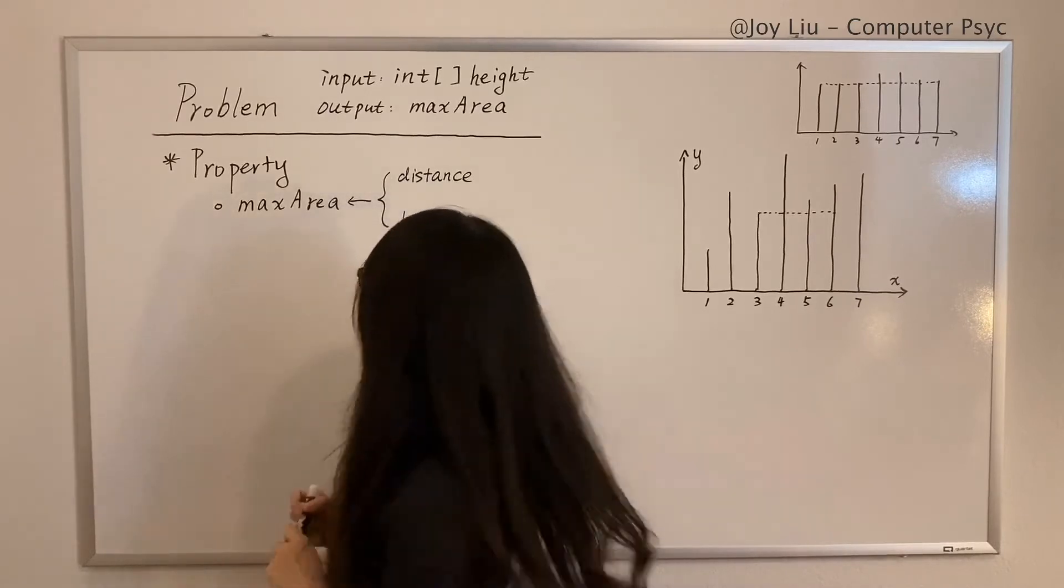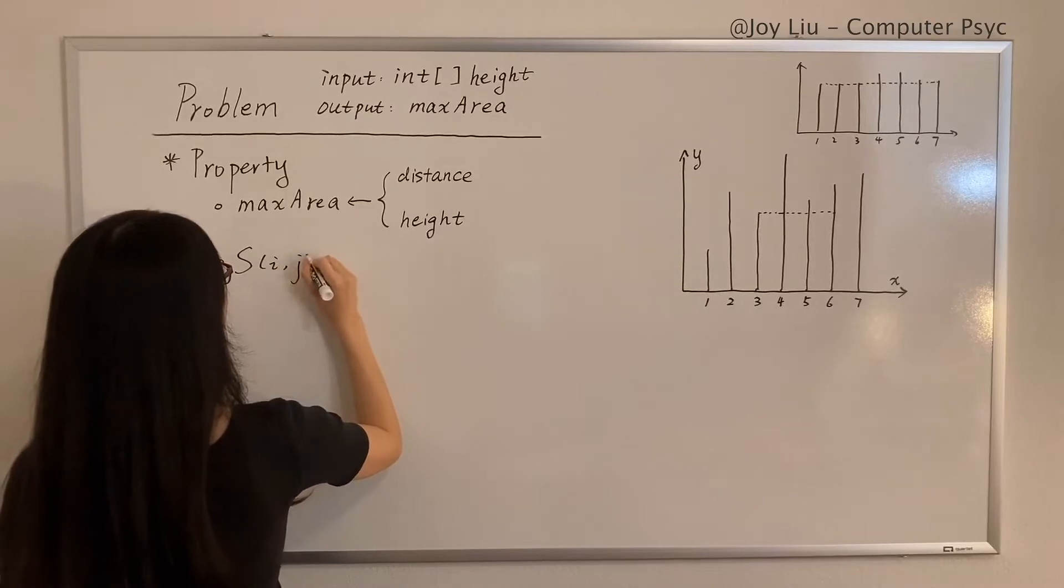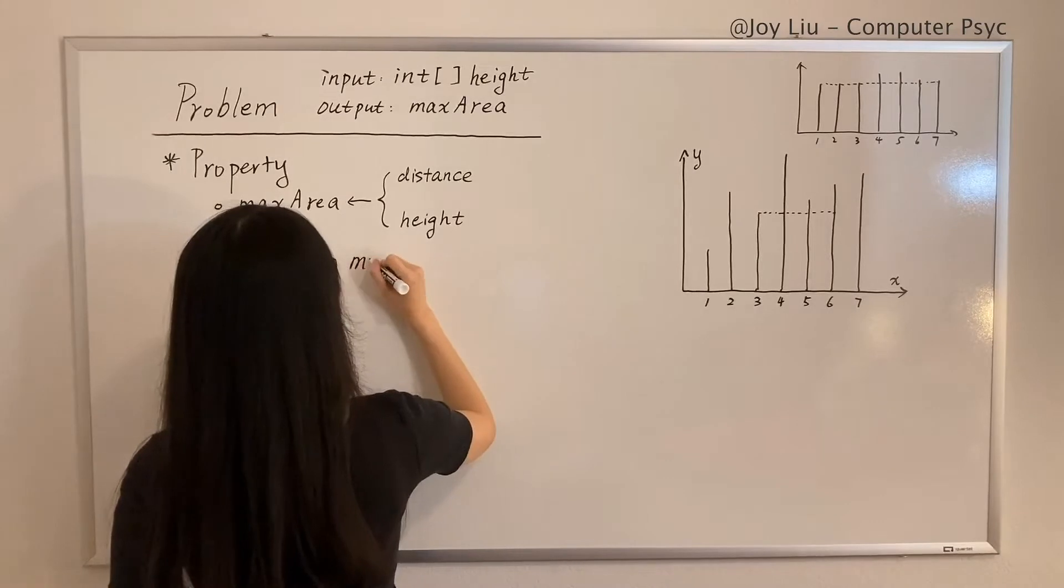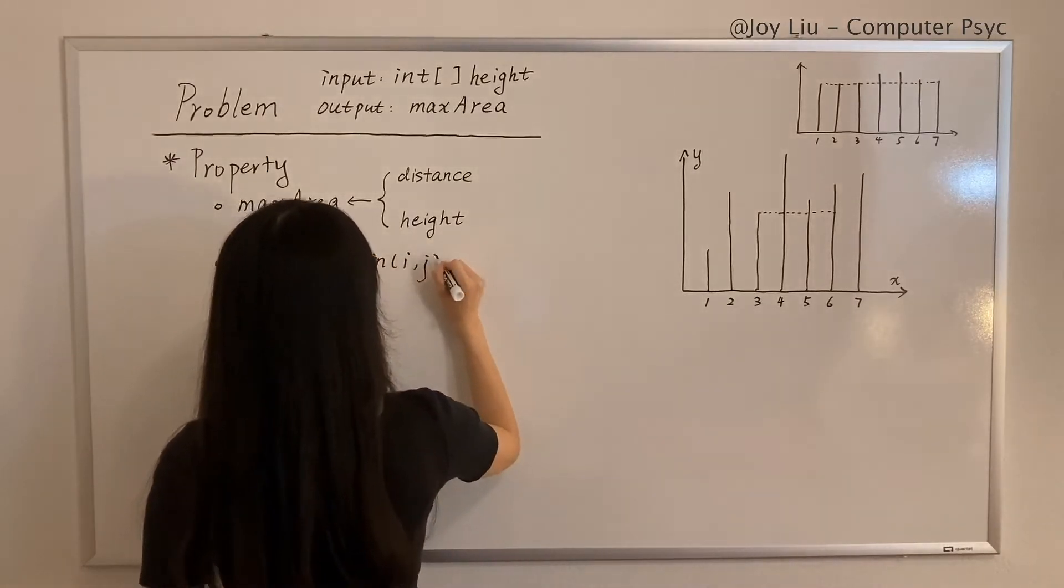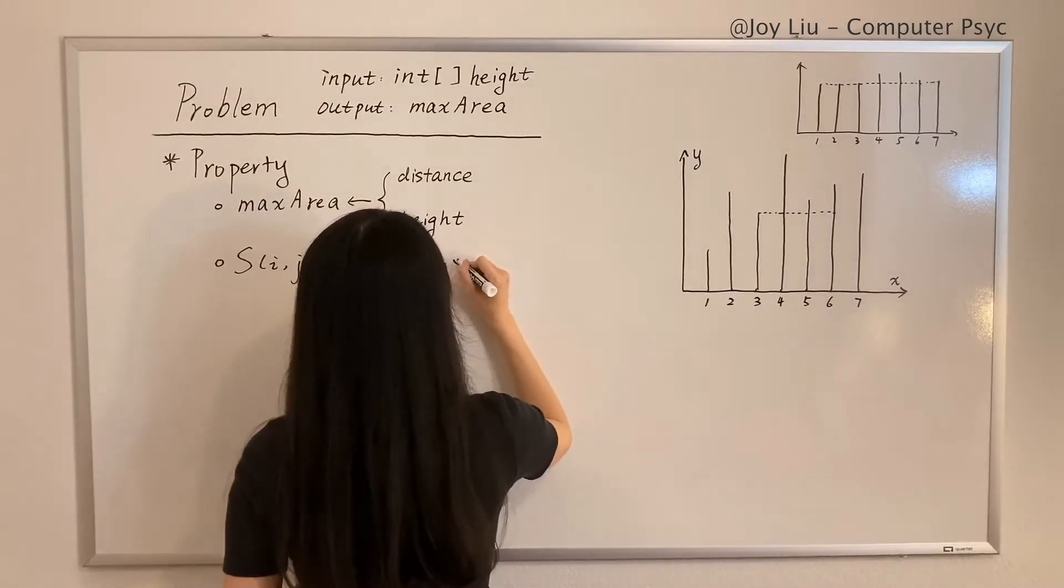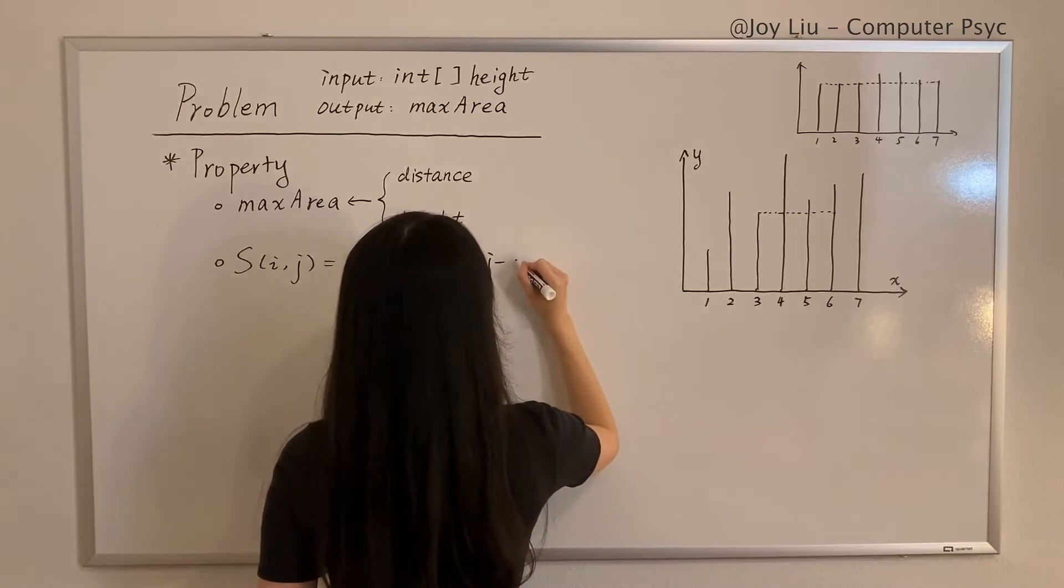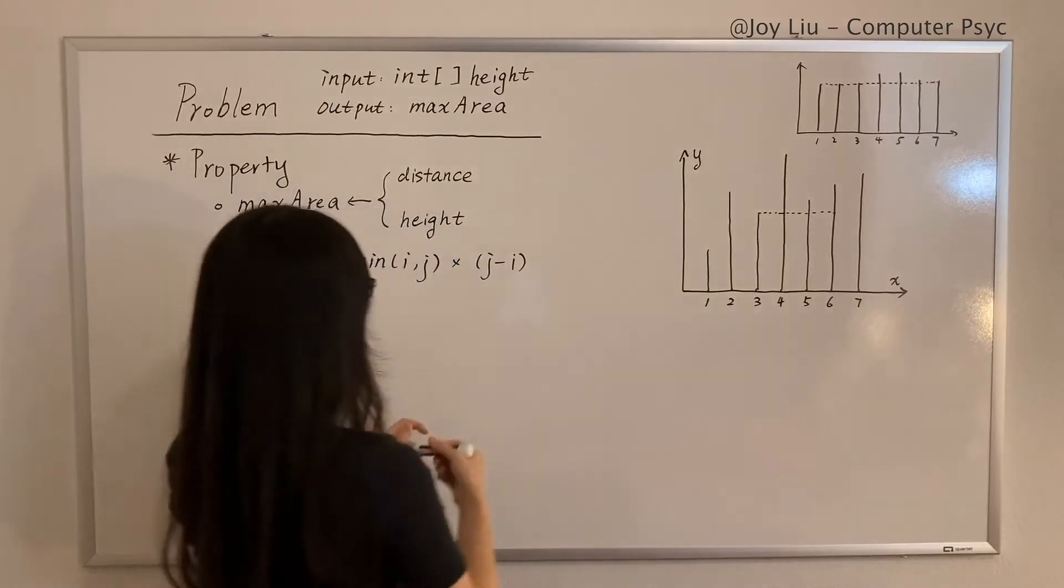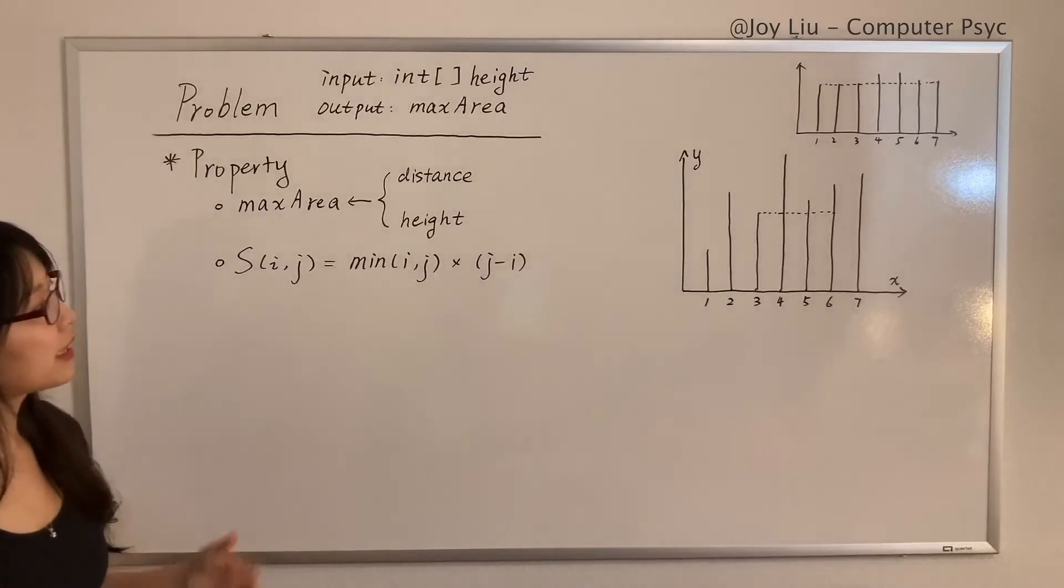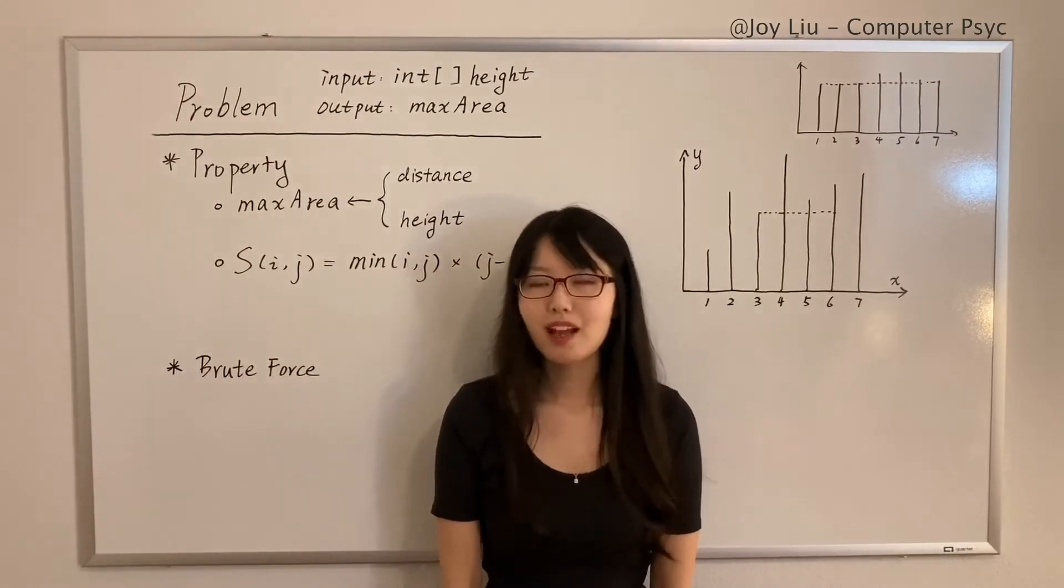Therefore, the area of a container of line i and j can be denoted as S(i,j) equals min of i and j, which is the shorter line, times (j - i).